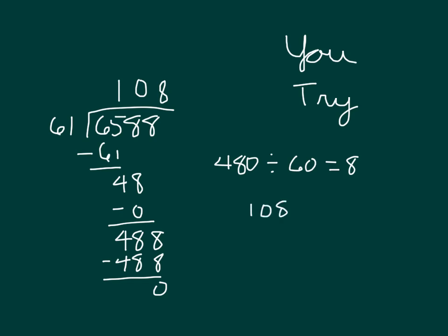Ideally, you set up 108 times 61 and work that out. There's step 1. Place a 0. 6 times 8 is 48, regroup of 4. That's a 4. That's a 6. And then we go ahead and add those two together. 6,588. And that is a check.